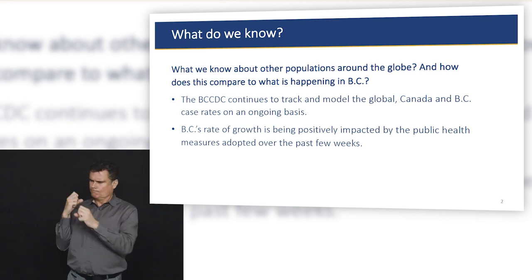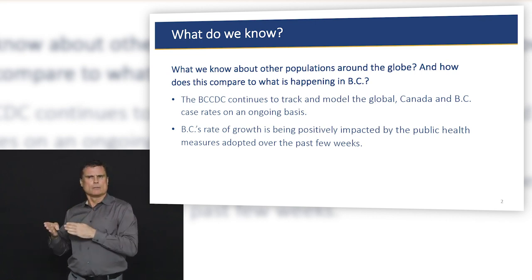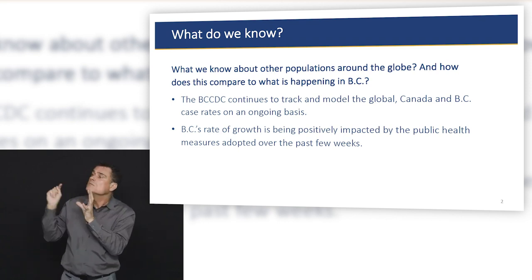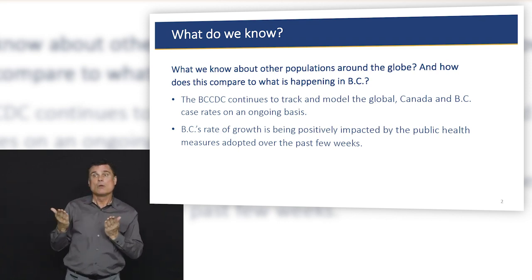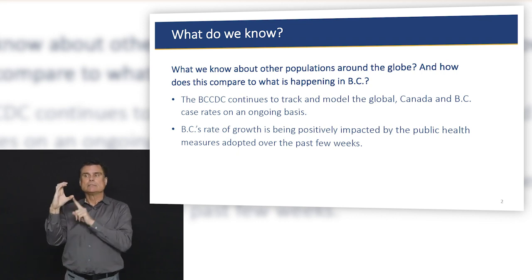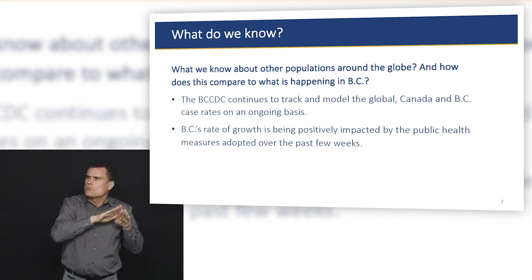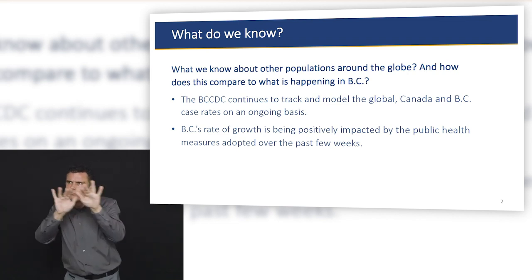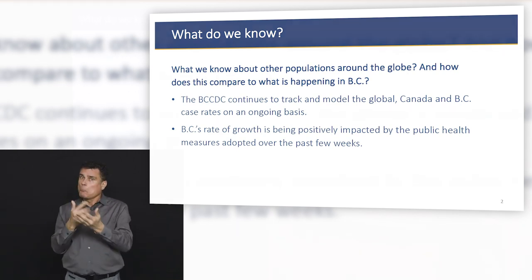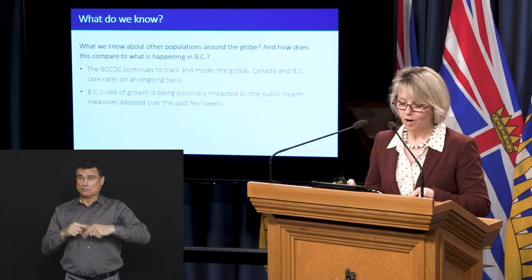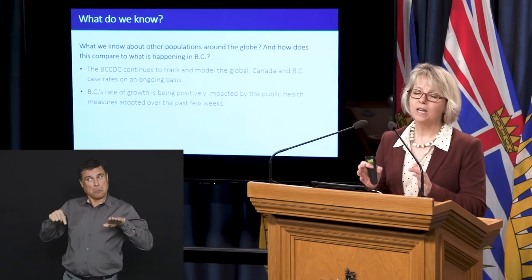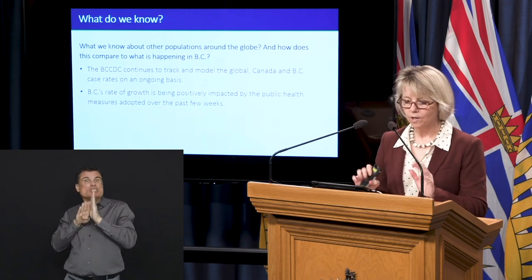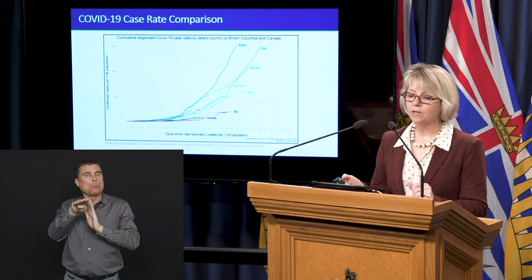The first type of modelling I'm going to talk about is how do we know where we are compared to what other populations have experienced around the globe. The BC CDC has done most of this work, modelled around what's happening in Canada and around the globe, and I will say there's a slight chance of optimism that our rate of growth is being impacted by the measures we've put in place in the last couple of weeks.